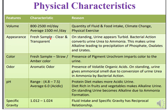Appearance of a fresh urine sample is clear and transparent. However, on standing — that is on keeping for a long time — the urine becomes turbid. The bacterial action converts urea into ammonia, which makes the urine alkaline and causes precipitation of phosphates, oxalates, and urates.